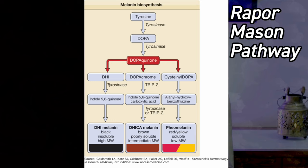Melanin is synthesized from phenylalanine. Phenylalanine is converted to tyrosine, and from tyrosine the pathway — known as the Raper-Mason pathway — begins. Tyrosine is converted to dihydroxyphenylalanine (DOPA), then to DOPA-quinone, and then to dihydroxyindole and DOPA-chrome, ultimately yielding dark brown or black eumelanin. When the pathway diverts to cysteinyl-DOPA, pheomelanin is produced, which is yellow in color.